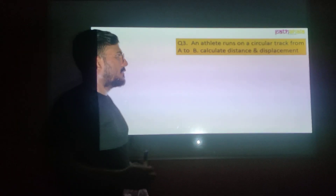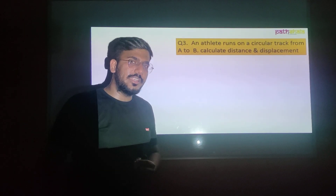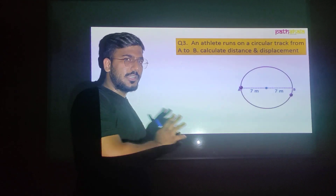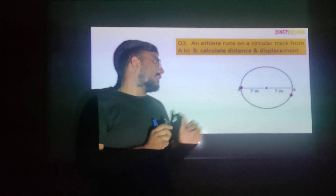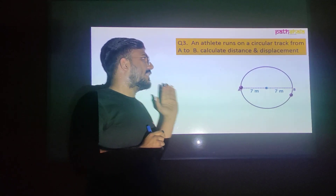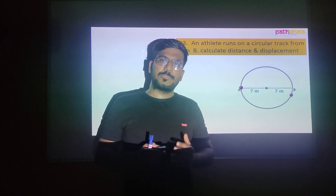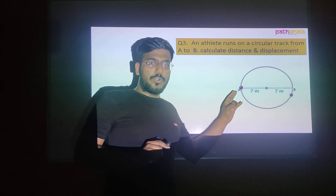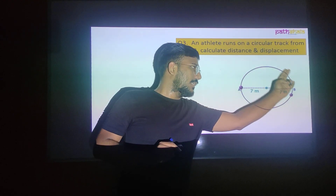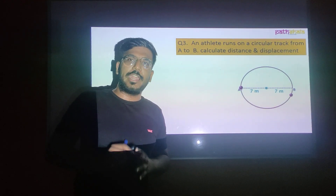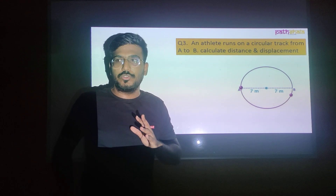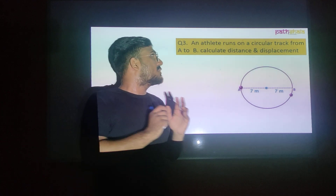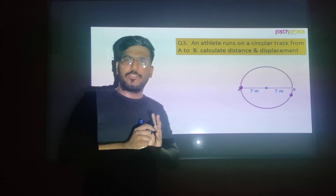Let's try one more. Third sum: an athlete is running on a circular track from A to B. This is the diagram — the athlete starts at A and ends at B. Calculate the distance and displacement.